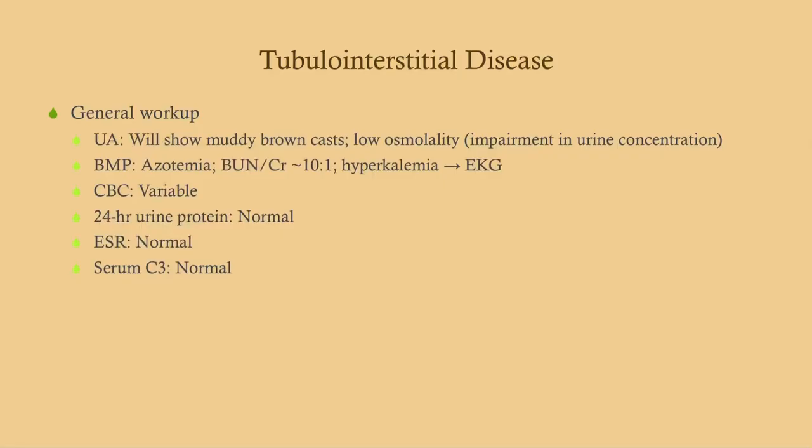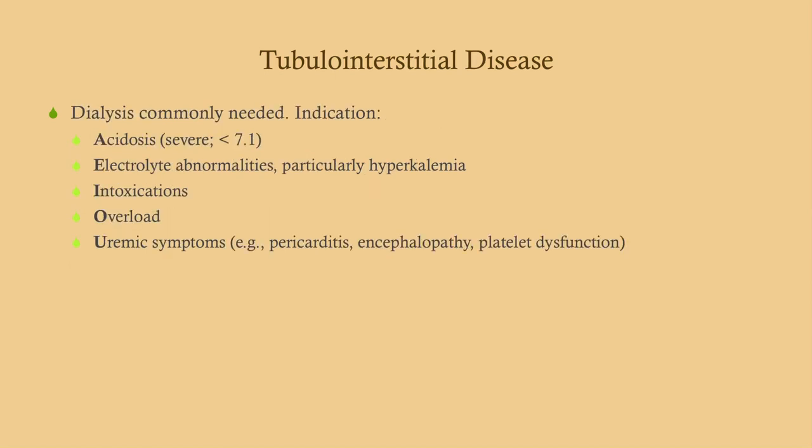The general workup shows muddy brown casts and low osmolality on urinalysis. BMP or CMP will show azotemia; the BUN-to-creatinine ratio is about 10:1, as opposed to 20:1 or more seen in pre-renal disease. Hyperkalemia is very common since the kidney is responsible for excreting potassium — if potassium is very high, get an EKG. The 24-hour urine protein will be roughly normal, and sed rate and C3 should be about normal.